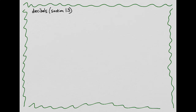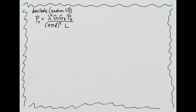Let's begin with a review of the last lesson. In it, we determined how the power at a receiver was related to the power transmitted, and we found that it was a function of the wavelength of the RF signal, the gain of the receive antenna, the gain of the transmit antenna, the transmitted power, the distance D between the transmitter and the receiver, and L, which are the system losses — for instance, the loss in the cables that connect the electronics to the antennas.